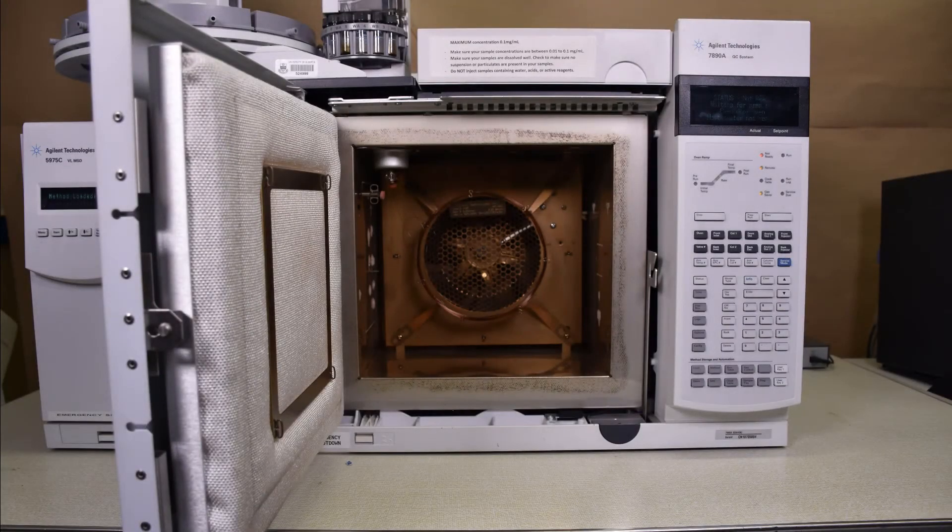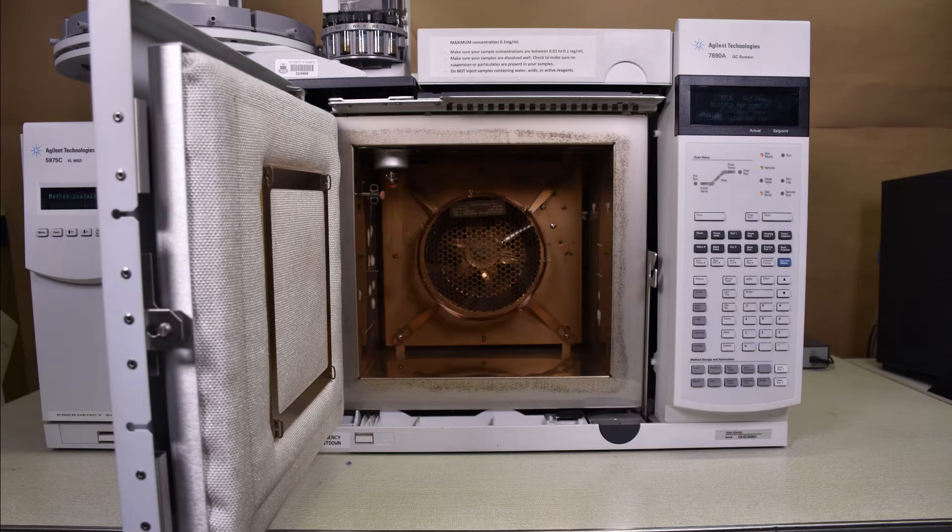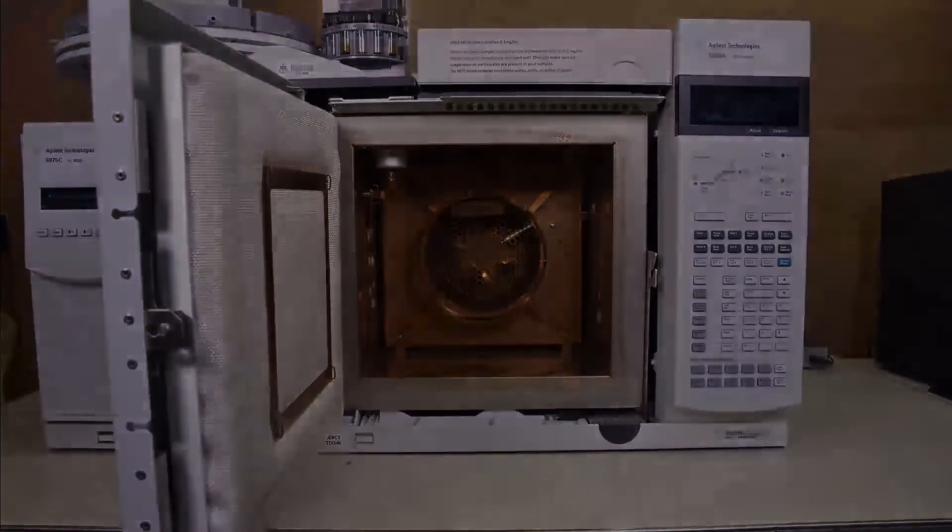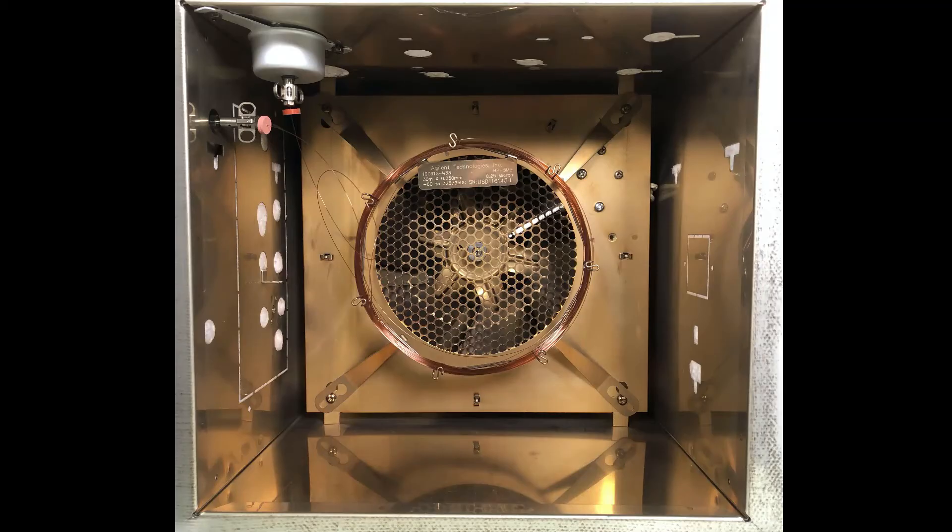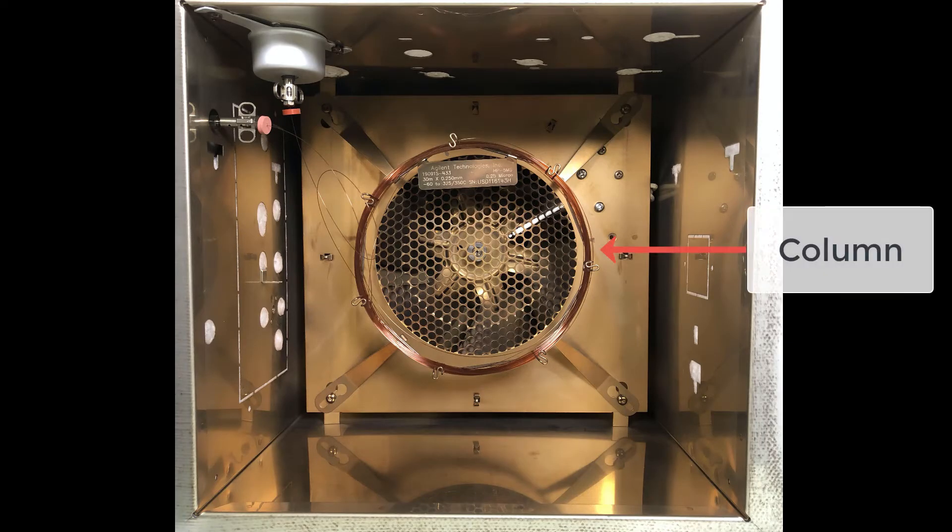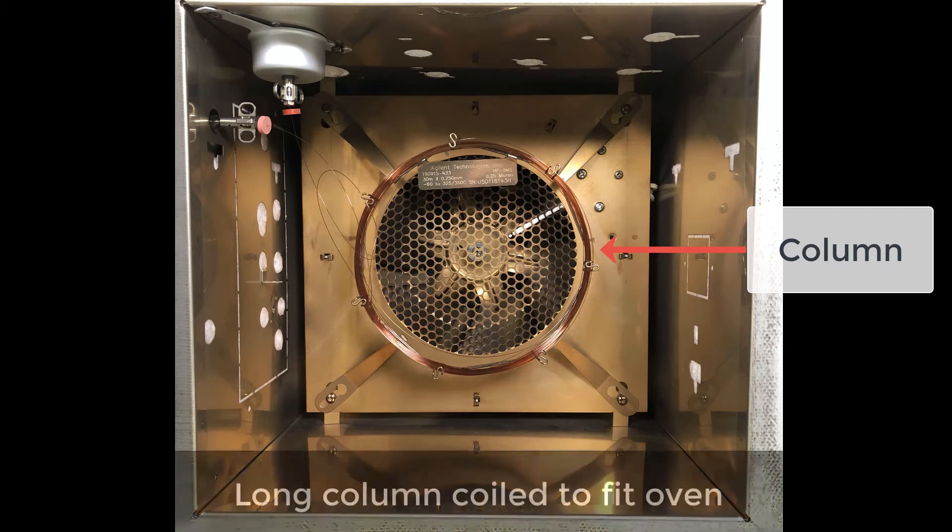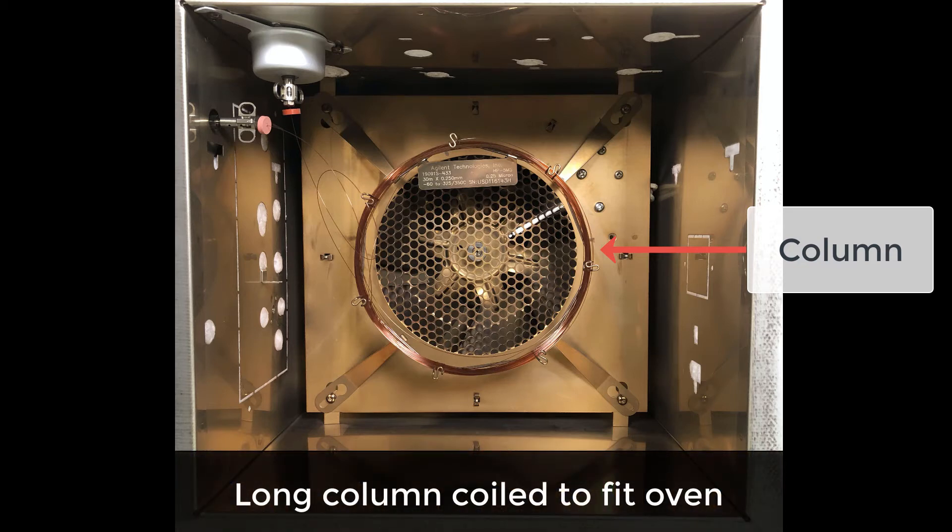The oven and column are the most important part of any GC. The insulated door must be closed when the GC is on. The oven keeps the column at the required temperature. Columns in GC are typically open tubular columns that have an inert gas as the mobile phase and a bound liquid as the stationary phase.